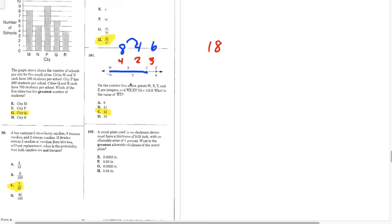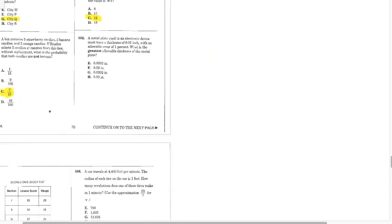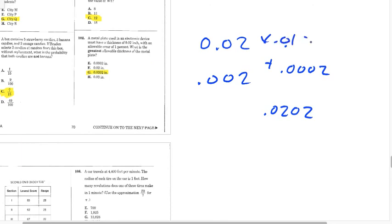Last problem. Metal plate used in an electric device must have a thickness of 0.02, 1% error. So, you have to multiply it by 1%. And then add it back on. So, this is going to be 0.02 plus 0.0002, which is going to be 0.0202, which is G. Okay. So, we took 0.02 times 0.01%. It gives us 0.0202.